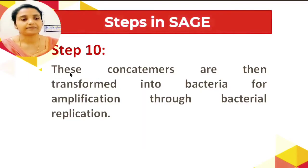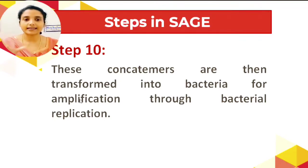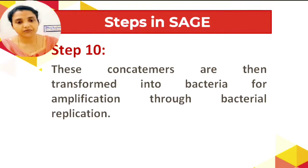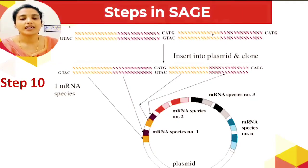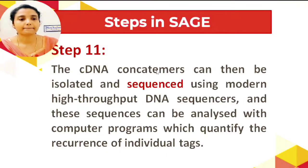Step ten: the concatemers are then transformed into bacteria for amplification through bacterial replication. The ditag concatemer is inserted into a plasmid — that is, cloning — and as the bacteria replicate, the concatemers are amplified.